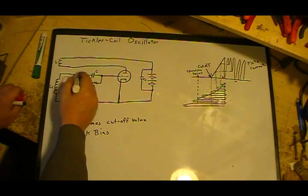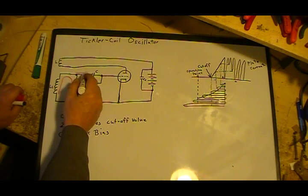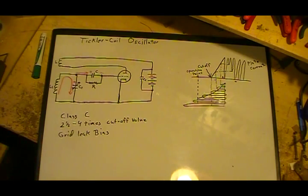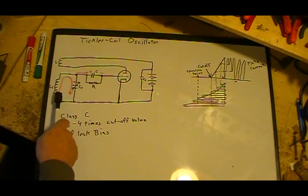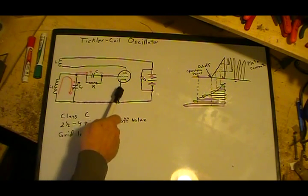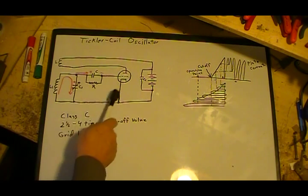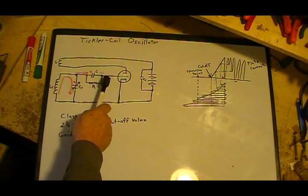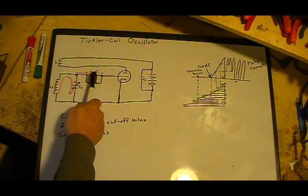As that happens, we also get part of the current that will start flowing this direction, which will put a positive here and negative here. Now as this voltage builds up, we start getting a current flow that starts happening for a time being in the grid circuit.